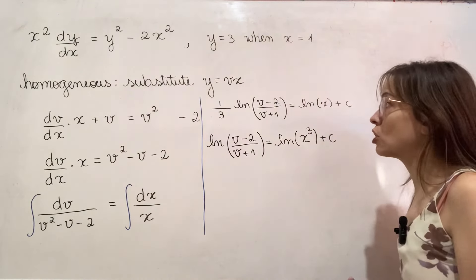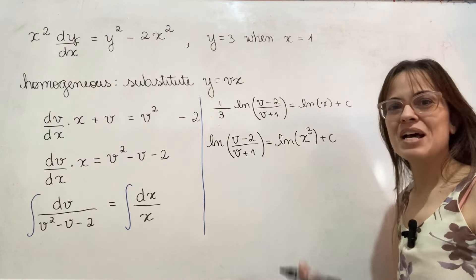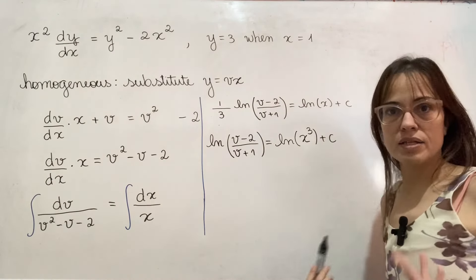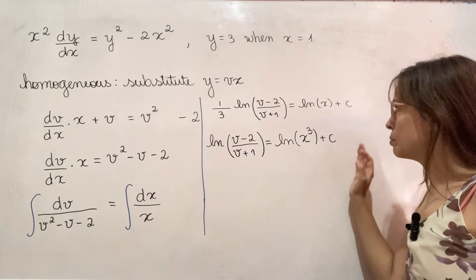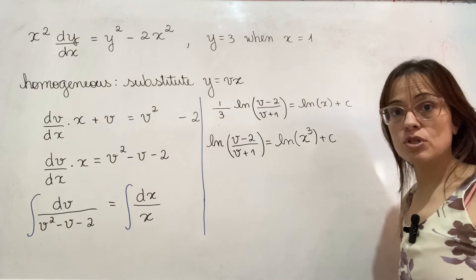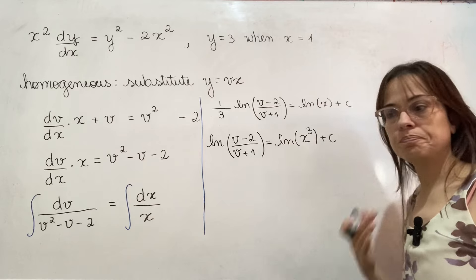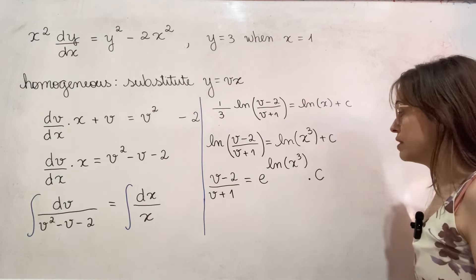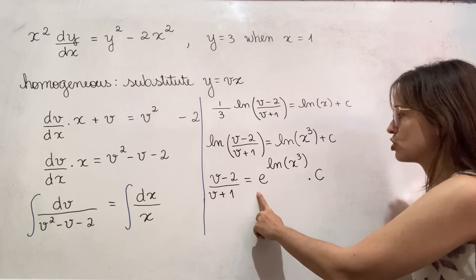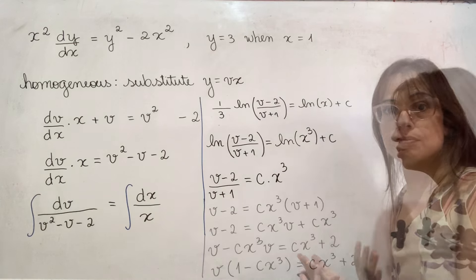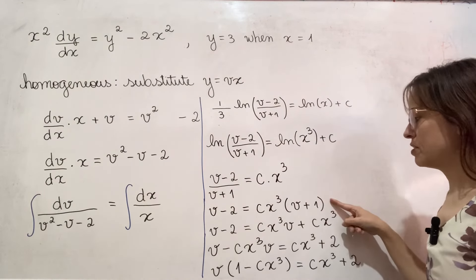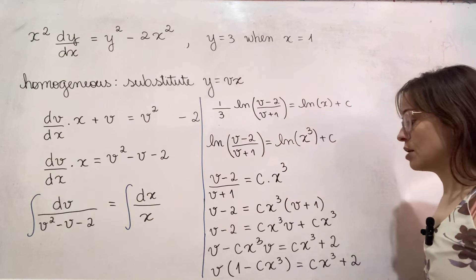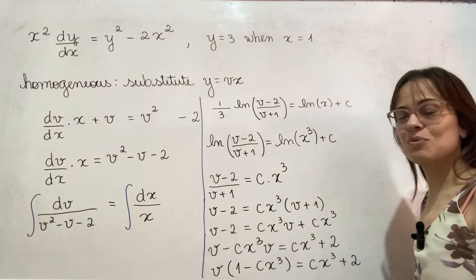A point was given in the exercise to help us find the value of c at the end. After some manipulation, e to the power of c becomes my new c, and x cubed also simplifies nicely. Now I'm in a linear equation situation again — the same sequence: multiply by the denominator, distributive, put the v's on the left, factor out, and divide.